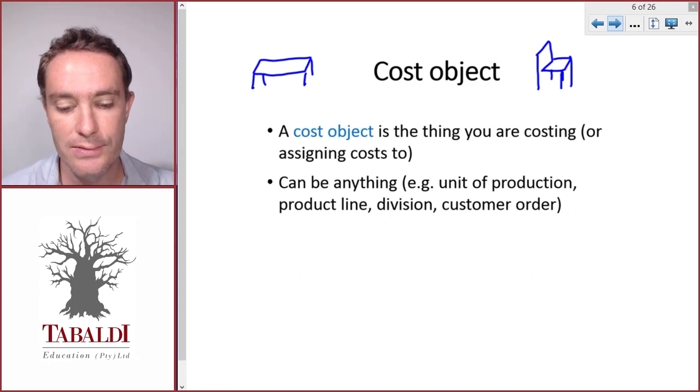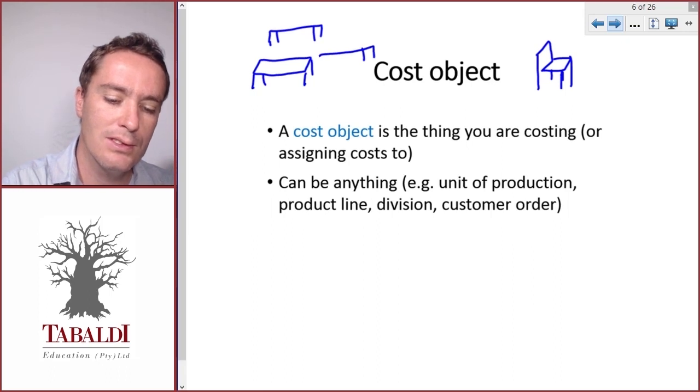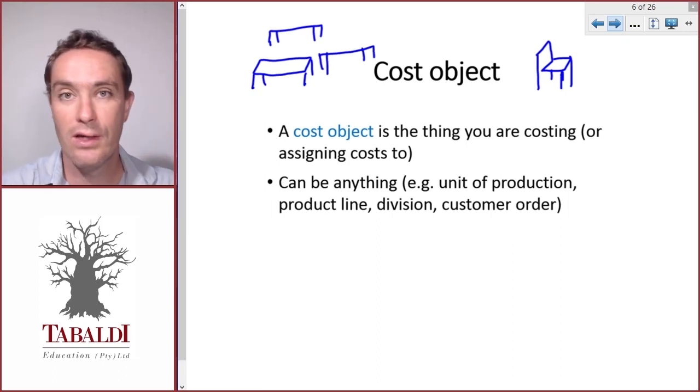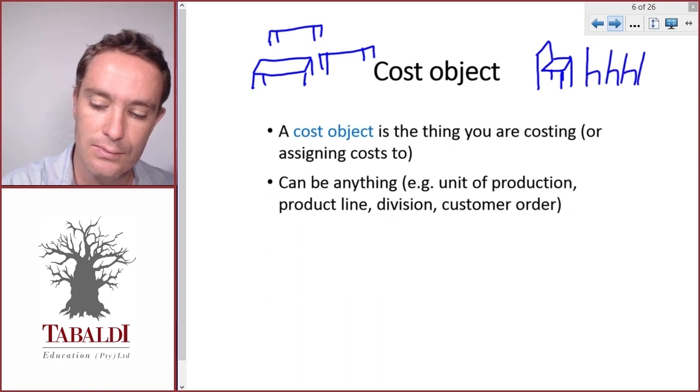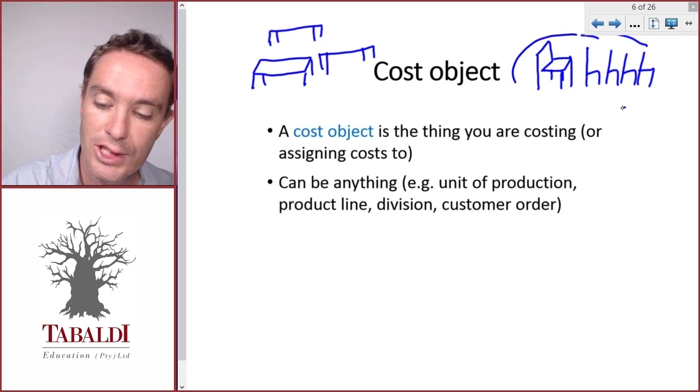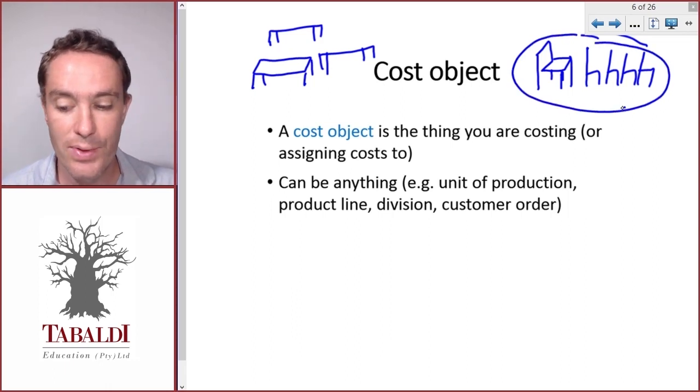We could also say the product line—tables, that's one product line, and then there's chairs. We can calculate the cost of the total chair product line, all the chairs made in a specific period. That could be a cost object. Obviously that would take up more costs than only one chair, but it could still be a cost object.